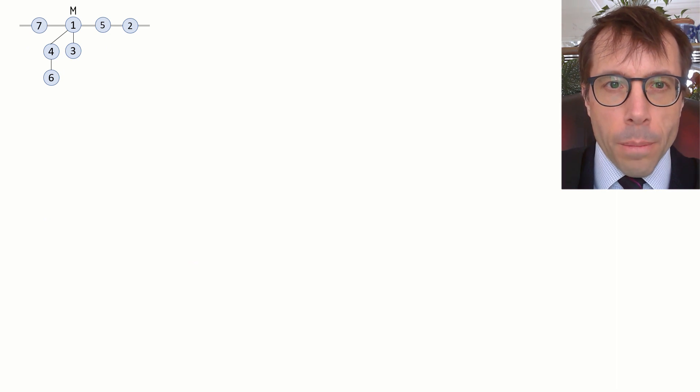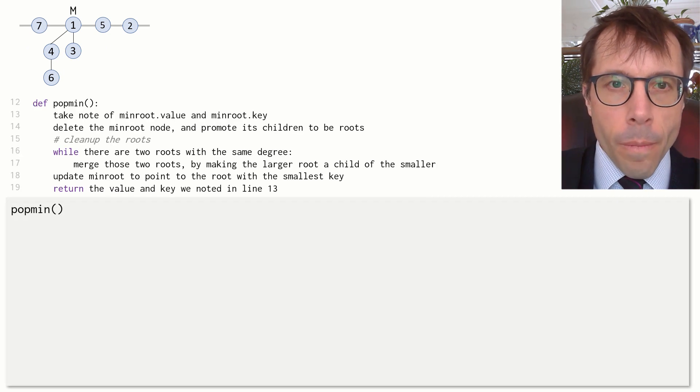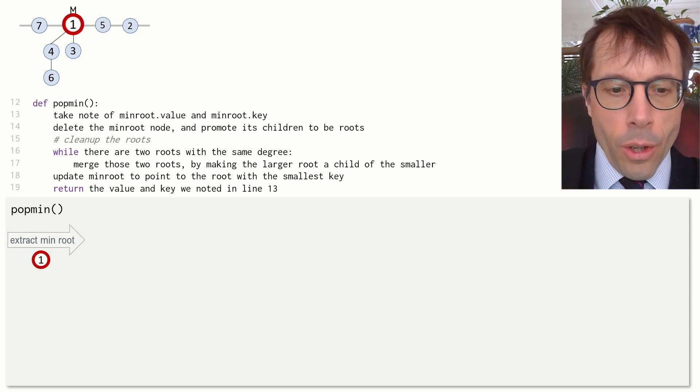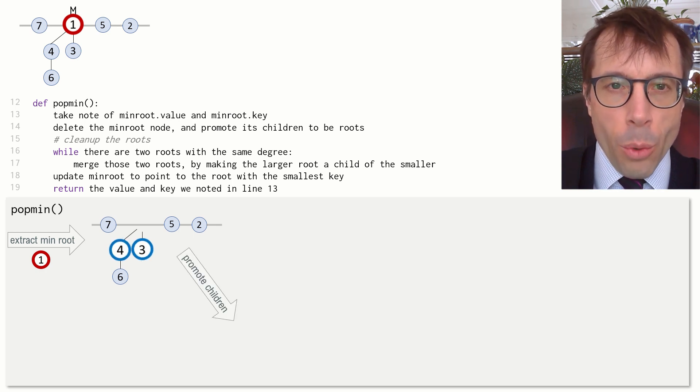Popmin is actually just the same as it was for the binomial heap. First, we extract the smallest item from the heap. This is the one that minroot is pointing to. This leaves us with some orphaned child nodes, which we will promote to the root list.